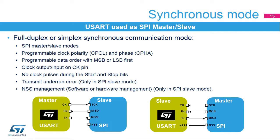The USART can also communicate synchronously. It can operate as an SPI in master or slave mode with programmable clock polarity (CPOL) and phase (CPHA), and programmable data order with MSB or LSB first. The clock is output in master mode or input in slave mode on the CK pin. No clock pulses are provided during the start and stop bits. When the USART is configured in SPI slave mode, it supports the transmit underrun error and NSS hardware or software management.